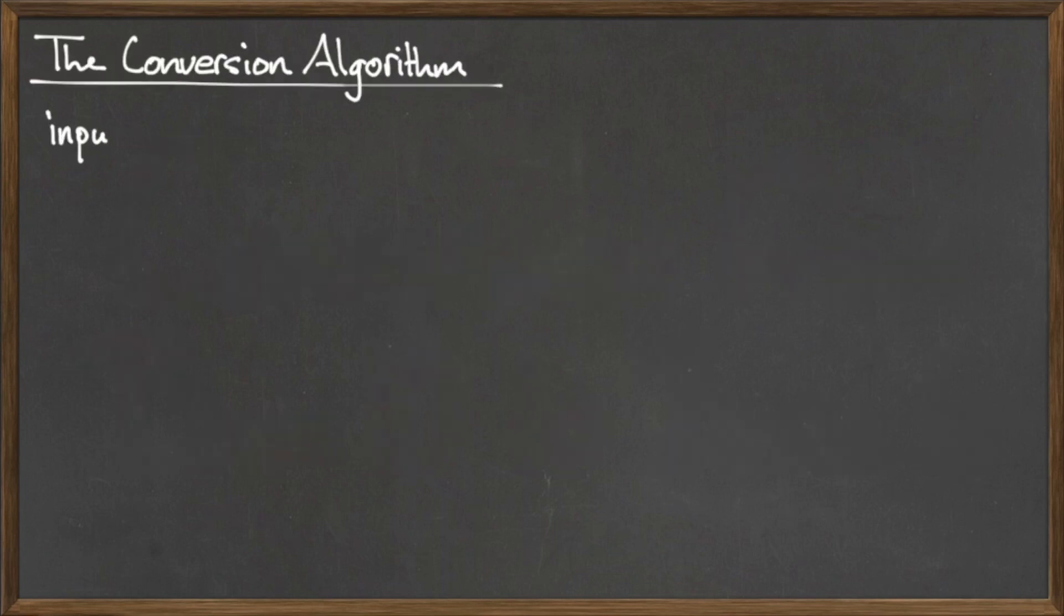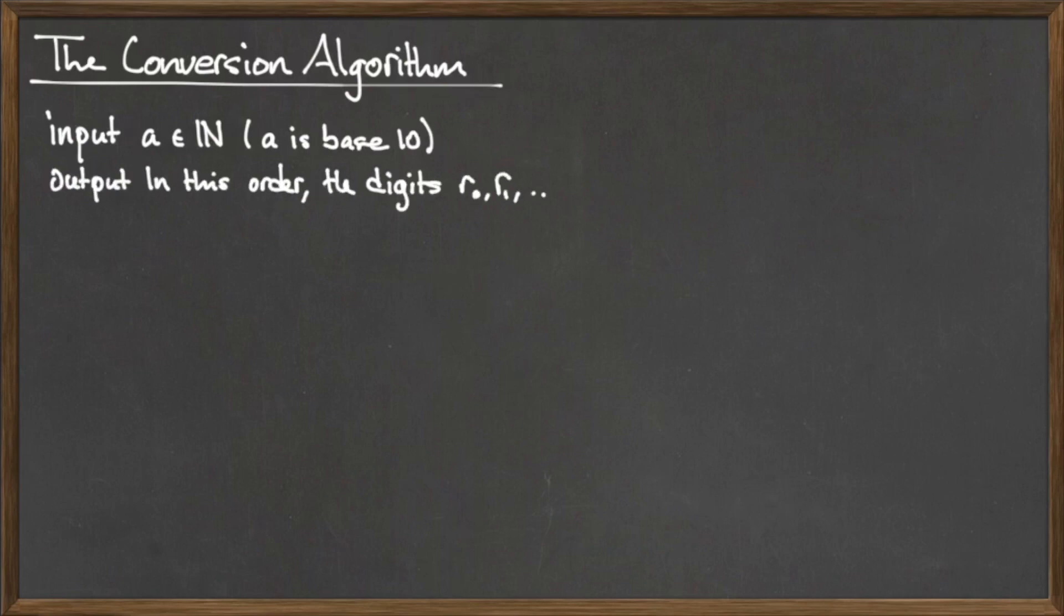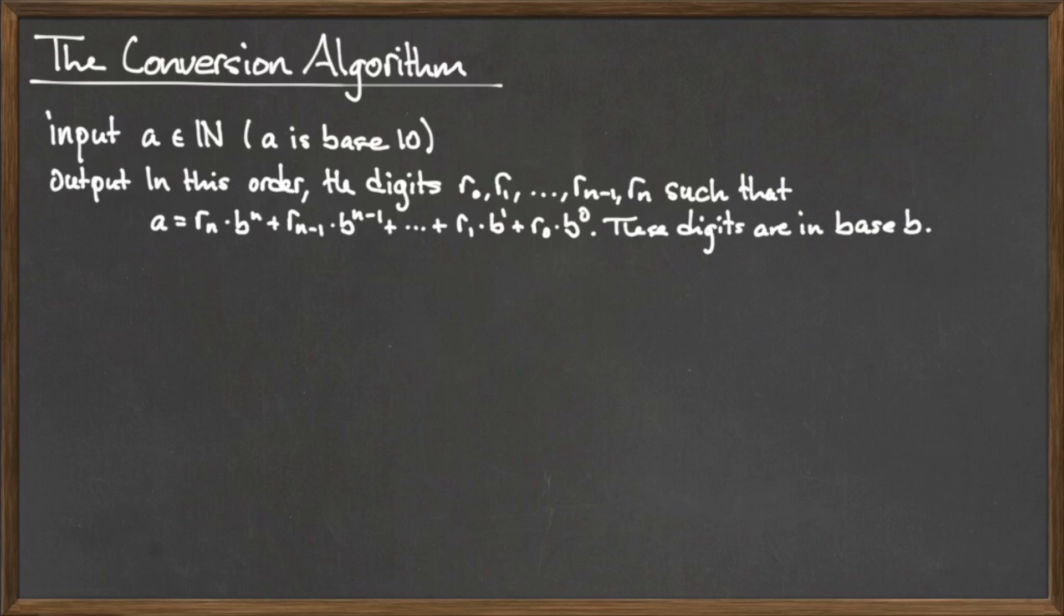The base 10 to base B conversion algorithm accepts as input a natural number A written in base 10, and outputs in order the digits r sub 0, r sub 1, through r sub n, which form the base B representation of the base 10 number.